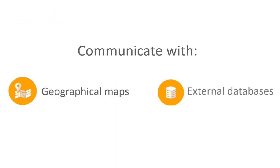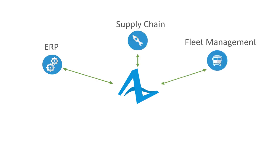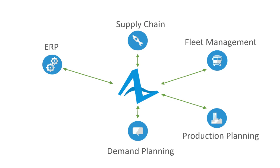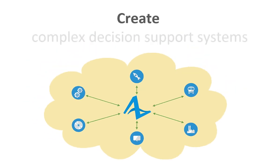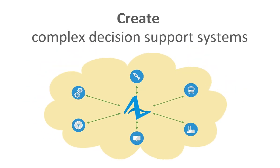AnyLogic can retrieve geographical data from a map, plus read and write in any database. The model can serve as an additional level of business intelligence for your ERP, supply chain, fleet management, production, demand forecasting, or other software, allowing you to create complex simulation-based decision support systems.